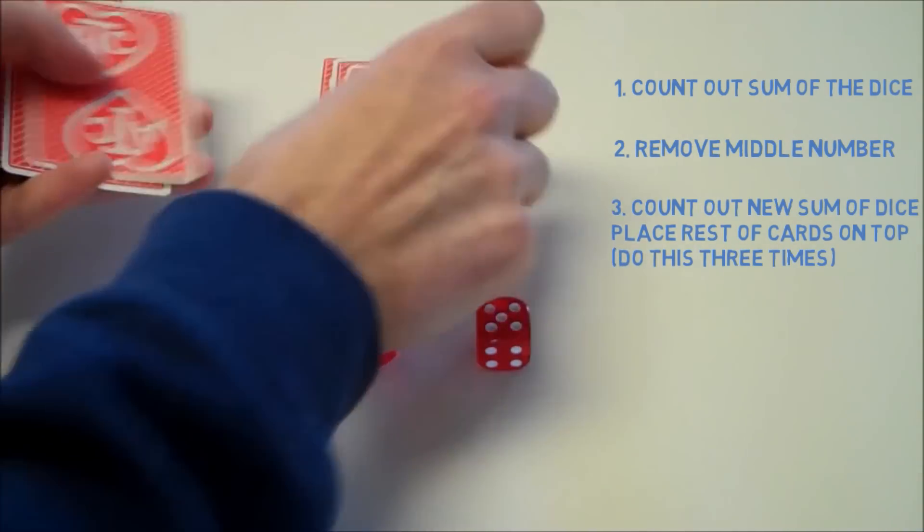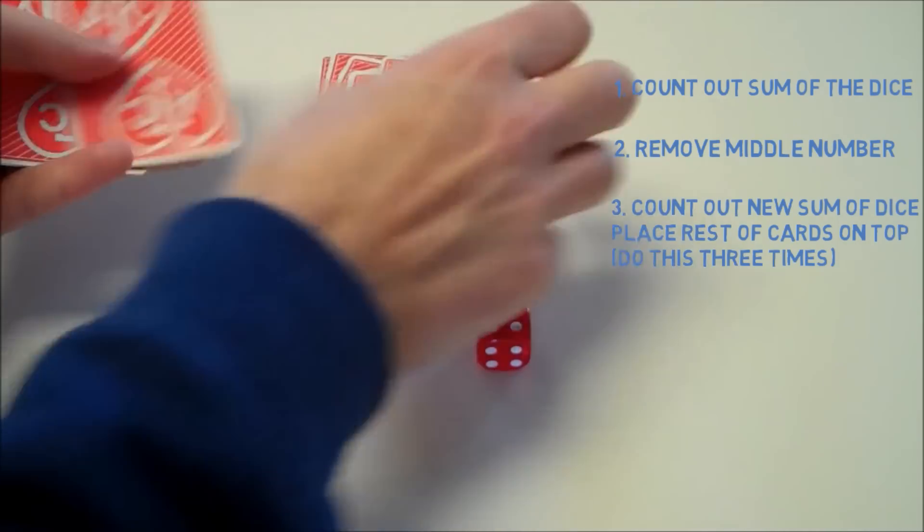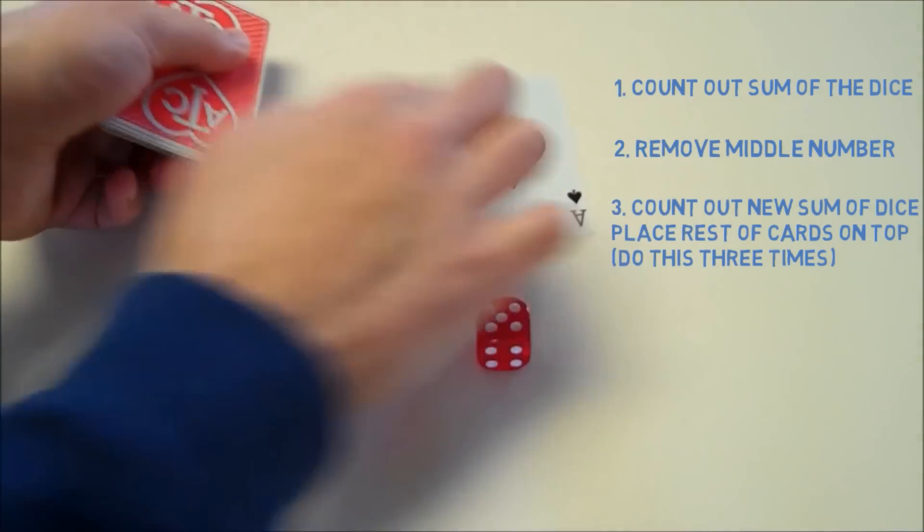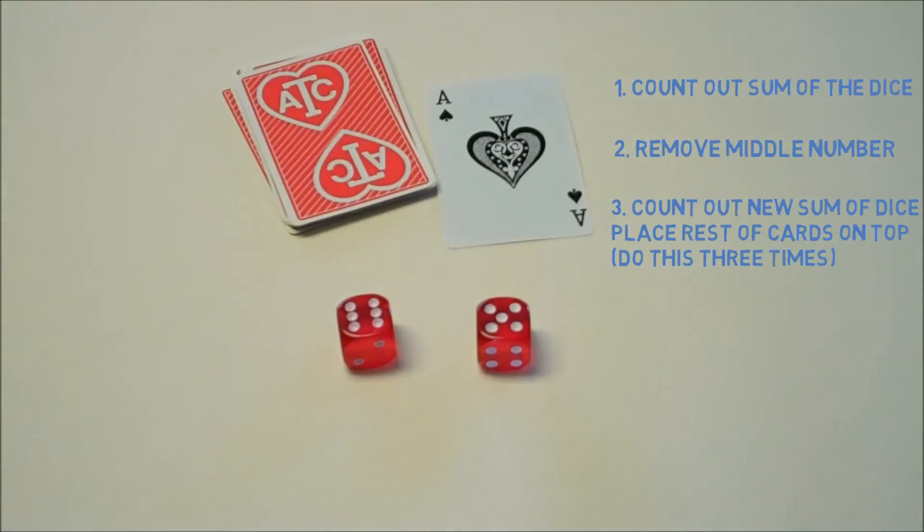And lo and behold, when you do this on the third time, you're going to put the cards down and say, hey, I know what this card on top is. It's the ace of spades.